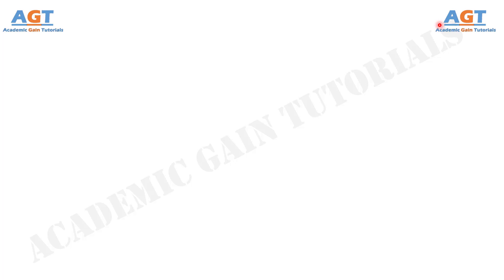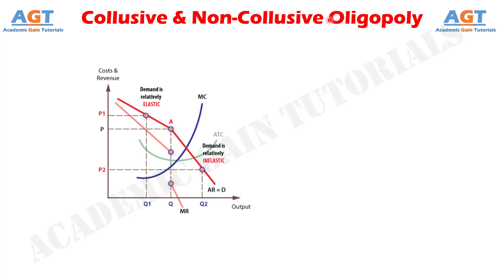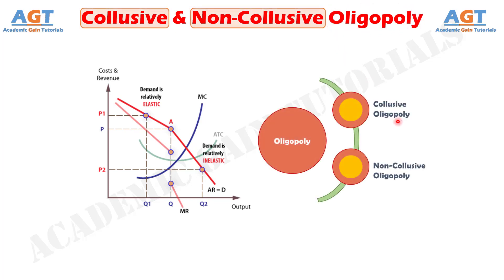Welcome to Academic Game Tutorials. In this video, we will look into the differences between collusive oligopoly and non-collusive oligopoly. The literal meaning of the word oligopoly is competition among few. Collusive oligopoly is when the oligopolists come in formal or informal agreement with one another to avoid competition among themselves.